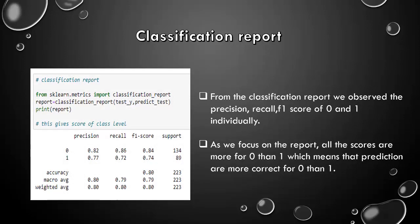Classification report. From the classification report, we observed that the precision, recall, F1 score of 0 and 1 individually and we can focus and see that all the scores are more for 0 than 1, which means that predictions are more accurate and correct for 0 than 1.